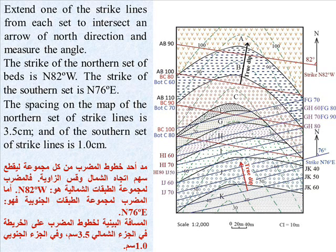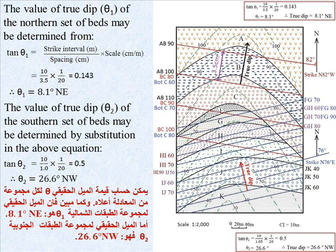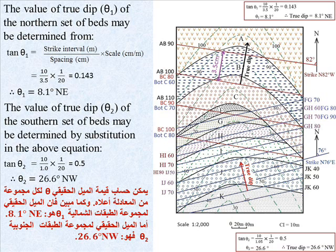The spacing on the map of the northern set of strike lines is 3.5 cm and of the southern set is 1 cm. The value of true dip θ₁ of the northern set may be determined from: tan θ₁ = strike interval / (spacing × scale). By substitution: tan θ₁ = 10 / (3.5 × 1/20) = 10 / (3.5 × 0.05) = 0.143.